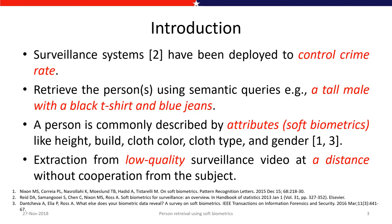Surveillance systems are deployed in society for security, and many cities and countries are now equipped with such systems. It is difficult to identify a person using face from surveillance footage due to its low quality and the distance between the camera and the person. In such scenarios, we require other attributes such as height, color, and gender to identify the person. Such attributes are typically known as soft biometrics — for example, a tall male with a black t-shirt and blue jeans.